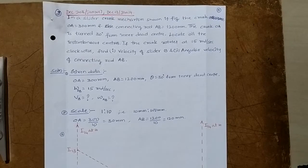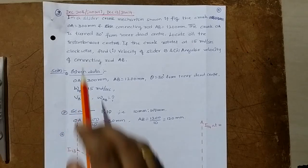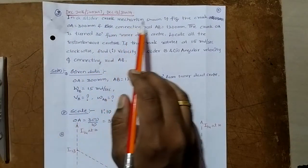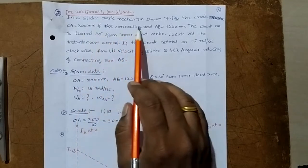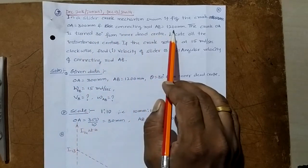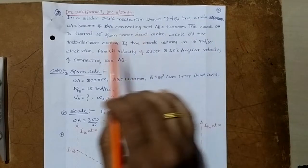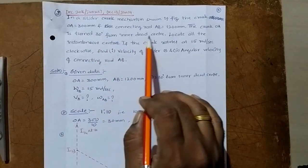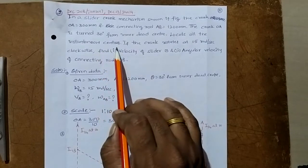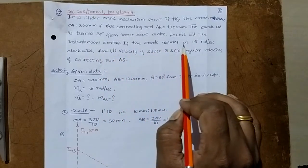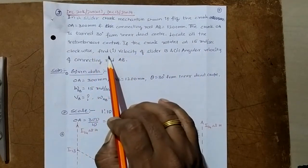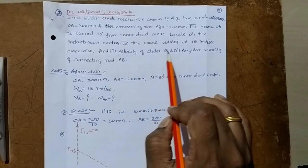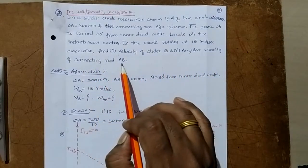Here I am going to discuss with you the problem on instantaneous center method. In a slider crank mechanism shown in figure, the crank OA is equal to 300 mm and connecting rod AB is equal to 1200 mm. The crank OA is turned 30 degrees from inner dead center. Find all the instantaneous centers. If the crank rotates at 15 radian per second clockwise, find the velocity of slider B and the angular velocity of connecting rod AB.